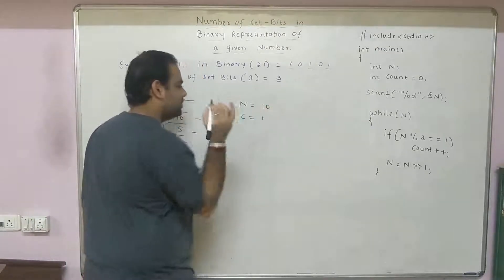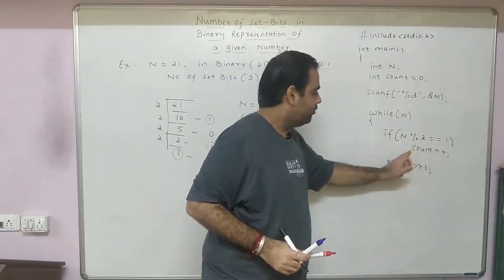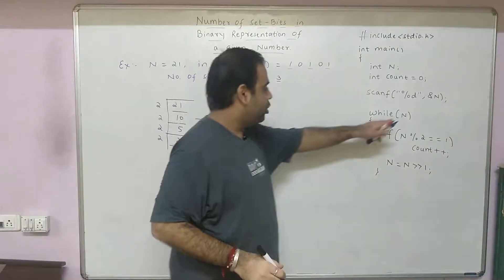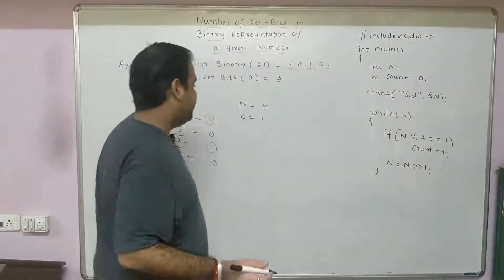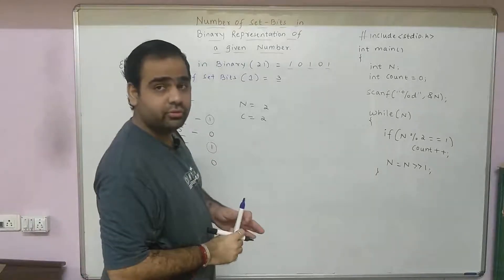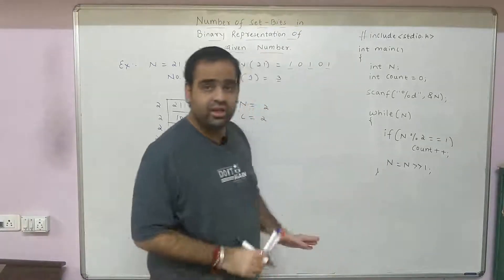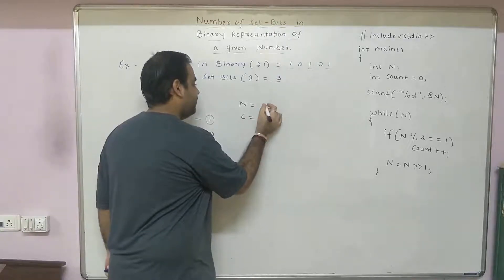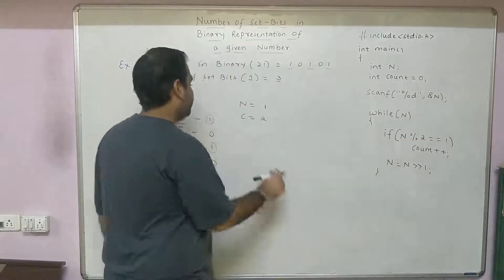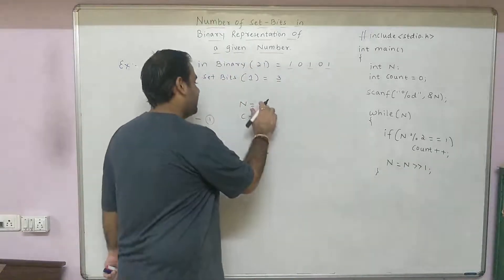n becomes 10. 10 % 2 is 0, so we don't increment count. n right-shifted by 1 becomes 5. Back to the loop: 5 % 2 equals 1, so count++ — count becomes 2. n right-shifted by 1 gives 2. 2 % 2 is 0, so no increment. n right-shifted becomes 1. 1 % 2 is 1, so count++ — count becomes 3. n right-shifted by 1 becomes 0.